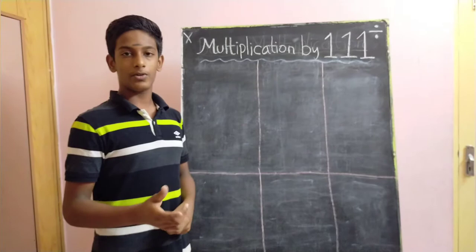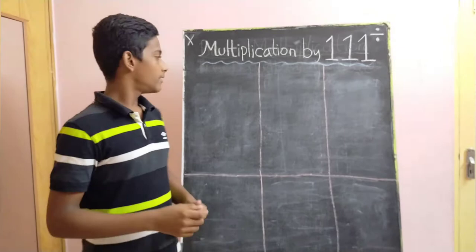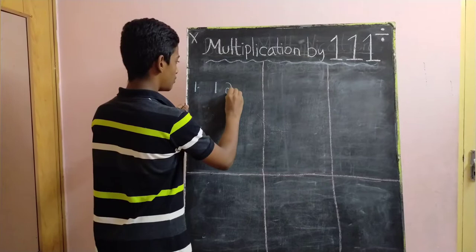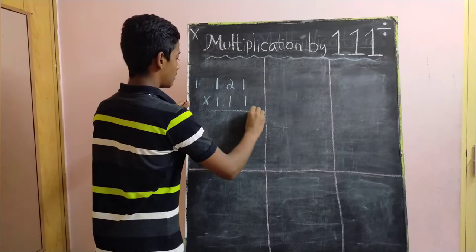As my brother taught you multiplication by 11, we are going to follow the same method with just one modification. Without any further delay, let's move on to the first example of this video. Let our first example be 121 multiplied by 111.